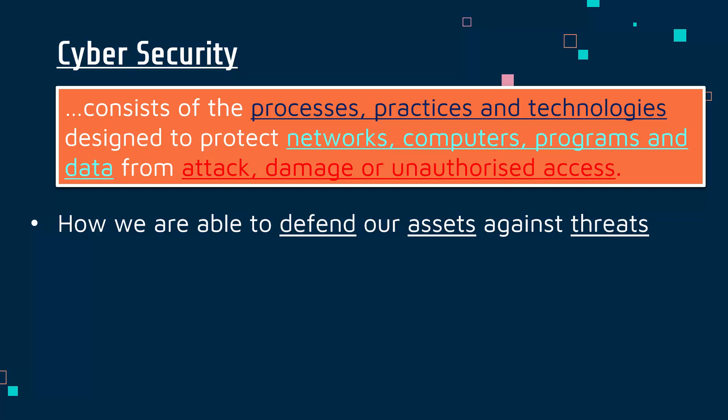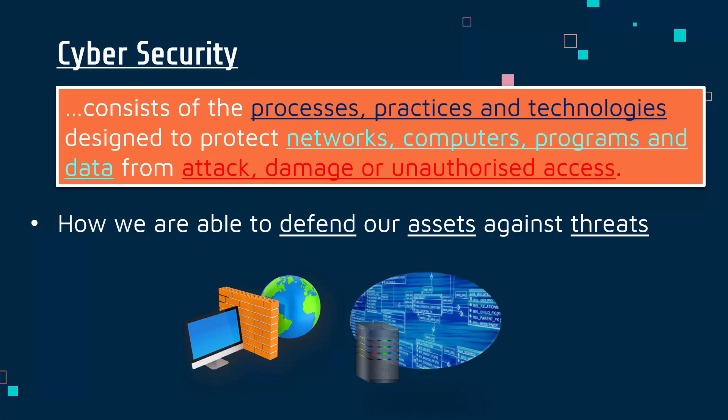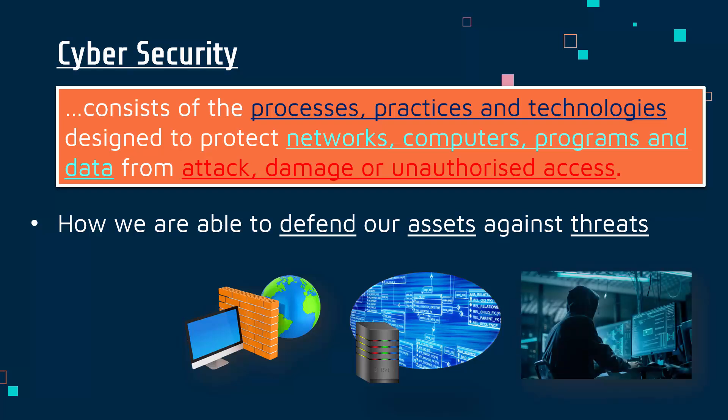An asset, as I said earlier, is some important item or concept we want to protect. For example, our defense might be a firewall — that would be a technology, either as hardware or software — which is there to protect one of our assets, perhaps a server containing lots of important customer information. Our threat might be a hacker who wants to get access to that server, and the firewall is there to try and stop them attacking it.